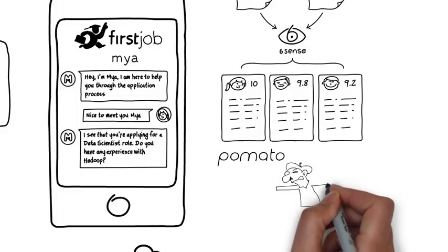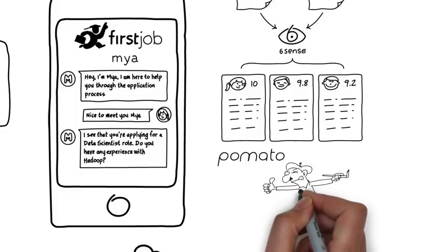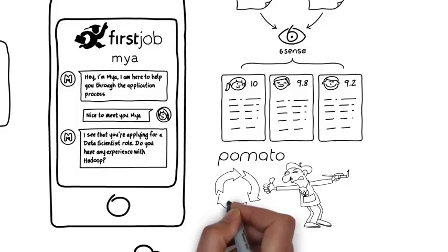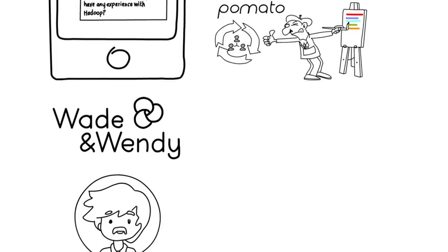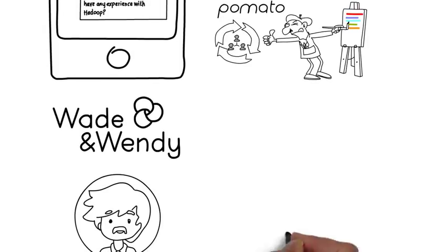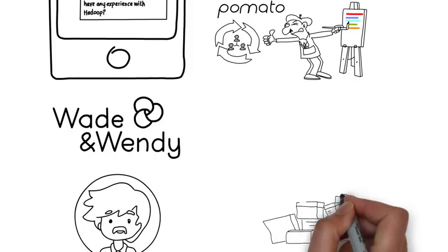Similarly, Pomato is an assessment and testing tool for recruiters to hire technical candidates. Pomato uses AI and machine learning to evaluate and validate IT candidate CVs. It will also paint a visual picture showing the candidate's skills and experience which can be used for comparative purposes.